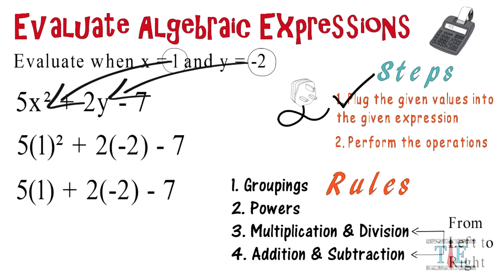And what are we going to do next? Multiplication. 5 times 1 is 5. 2 times negative 2 is negative 4. Add and subtract now: 5 minus 4 minus 7 gives us negative 6. So now we've performed our operations and we can check off the last step.